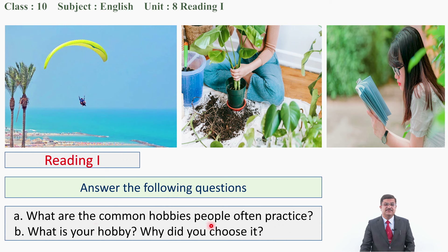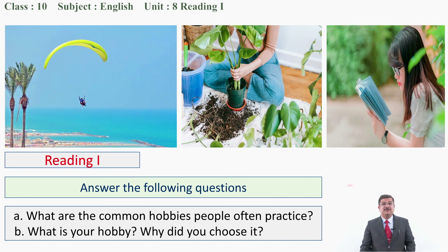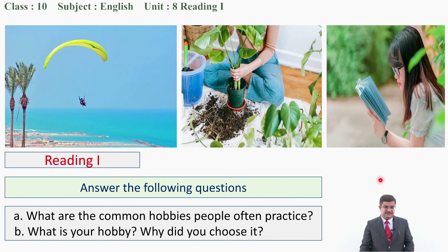The answer is very simple. Some people practice cooking as their common hobby; some people are busy jogging; some people go paragliding; some people love reading books; and some people adore writing poems and stories. You may write the answer in this way.